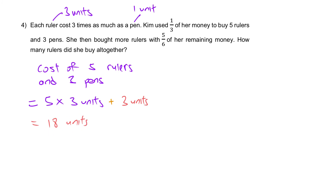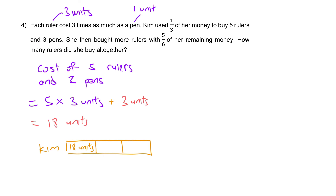Drawing the model for Kim's total money: each third equals 18 units, so we have 18, 18, 18 — Kim's total money is 54 units. She used the first third (18 units) to buy five rulers and three pens. The remaining two-thirds is 36 units.